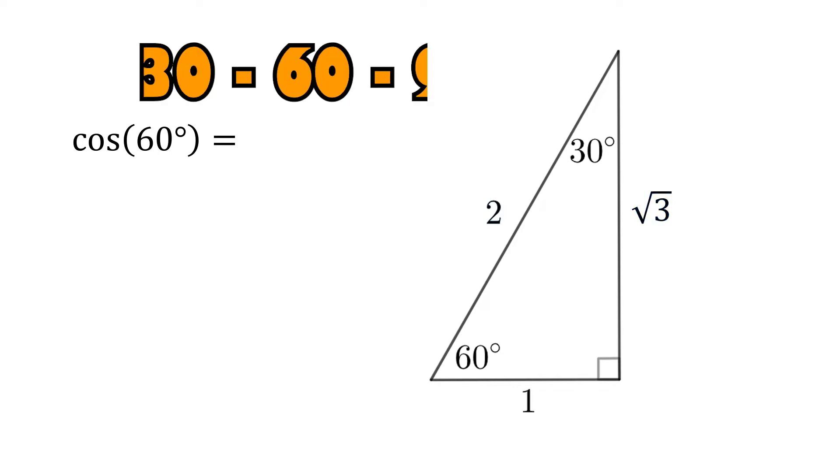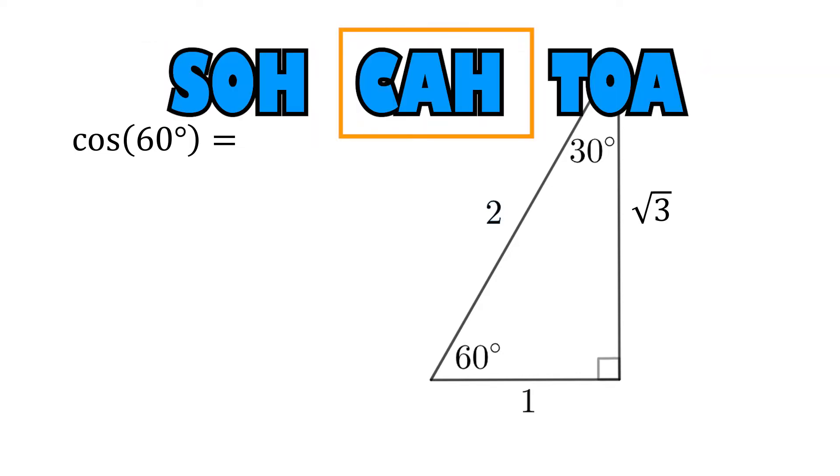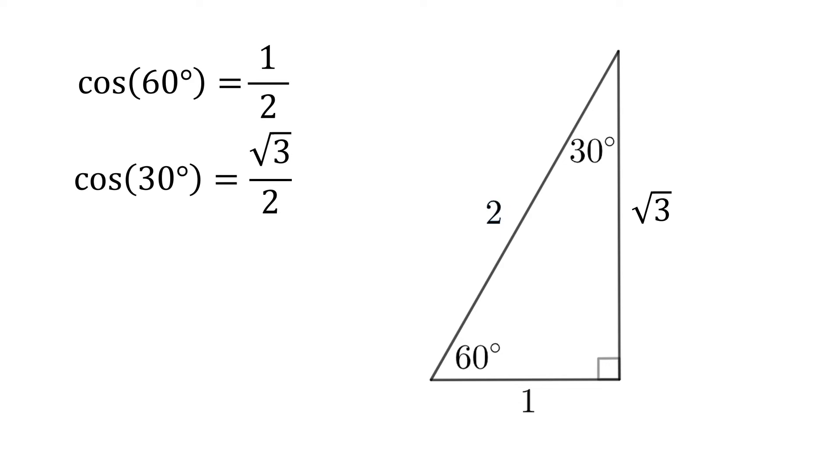And that's our 30, 60, 90 degree triangle. Using cosine equals adjacent over hypotenuse, we can tell that cosine 60 degrees equals a half. Cosine 30 would be square root 3 over 2. And if we look at the sine values, we see the values switch. Sine 60 is root 3 on 2, and sine 30 is a half.